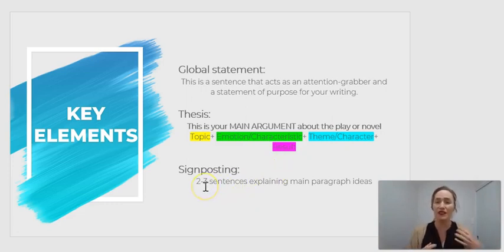And then signposting is two to three sentences that explain the main paragraph ideas you have. So basically what are the three points that you're going to look at? Because in an essay like this, sometimes you may only look at two points and try to have longer analysis, but generally it's really nice if you can think of three points so that you've got one paragraph for each and you've got enough analysis to show that you've really given deep thought to this question.